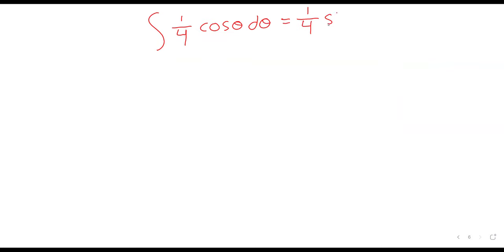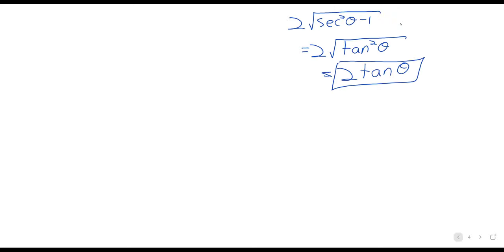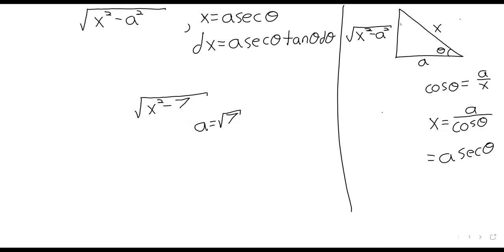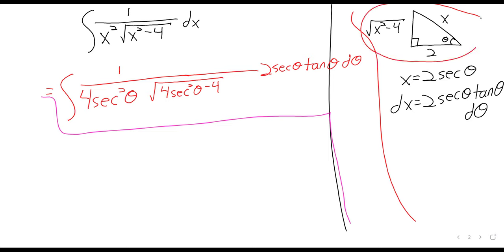One fourth the sine of theta plus C. And now this isn't our answer. Because what's this theta? This theta isn't our real variable. It's just something we made up so that we'd be able to get rid of a square root. So the point of drawing this triangle isn't just to let you know, figure out what substitution to do. It's also to help you simplify once you get to the end.